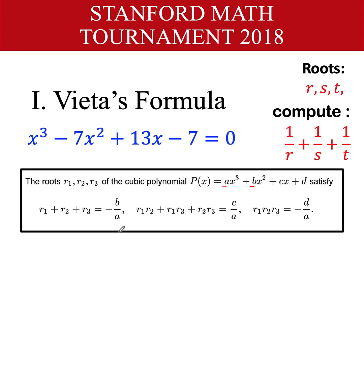The product of the first and second roots plus the product of the first and third roots plus the product of the second and third roots equals c over a — the coefficient of the x term divided by the leading coefficient. And lastly, the product of all three roots, r sub 1 times r sub 2 times r sub 3, equals negative d over a.